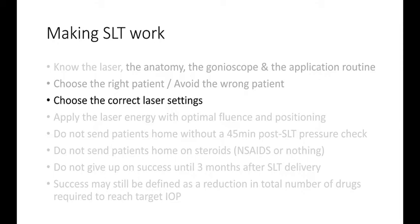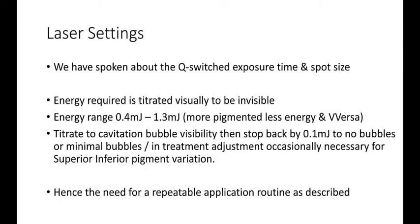Next, choose the correct laser settings. We have already spoken about the Q-switched exposure time and spot size. The energy requirement is titrated visually to be invisible. The energy range is usually between 0.4 to 1.3 millijoules — more pigmented, less energy, and vice versa. We need to titrate to cavitation bubble visibility, then step back by 0.1 millijoule to no bubbles or minimal bubbles visible. We may need to adjust power occasionally if there is variability between pigmentation superiorly and inferiorly, hence the need for a repeatable application routine as described earlier.